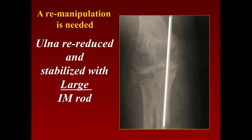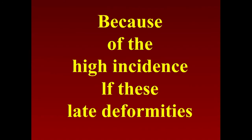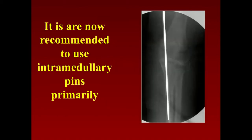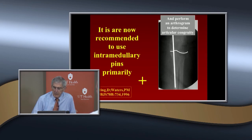Because of the high rate of late deformity in Type 3, I now routinely place an intramedullary pin — usually a substantial size, such as a rush rod or a quarter-inch to three-eighths-inch pin. An arthrogram is performed to confirm articular congruity. This is important because the proximal location makes cast molding unreliable for maintaining reduction.